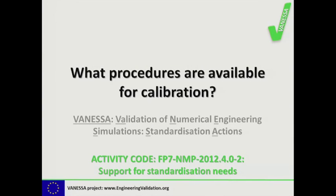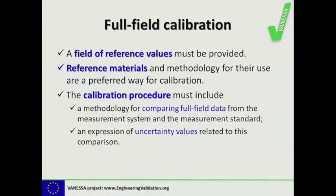What procedures are available for calibration? Since we are talking about full-field measurements, we need full-field calibration to be addressed. For full-field calibration, the first thing you need is a field of reference values rather than a single one. Reference materials and the methodology for their use are a preferred way for calibration. The calibration procedure must include a methodology for comparing full-field data from the measurement system with the measurement standard or reference material, and it needs an expression for uncertainty values related to this comparison.